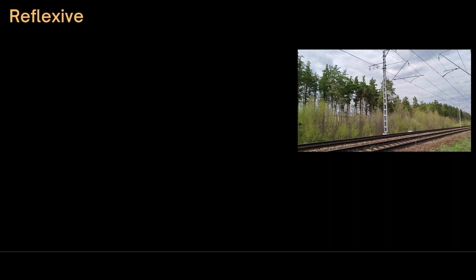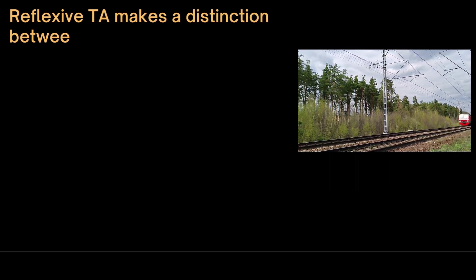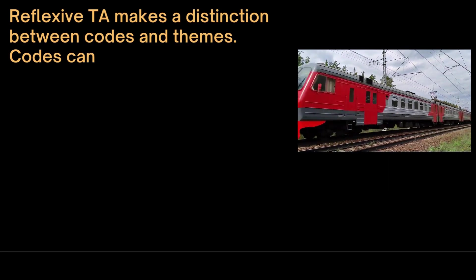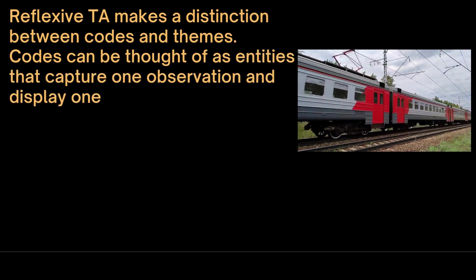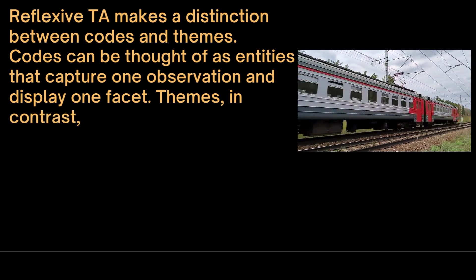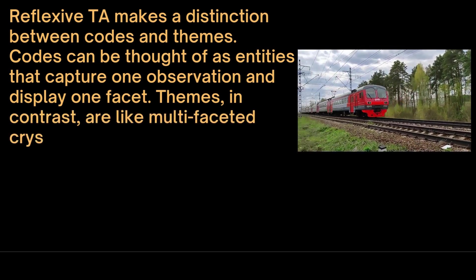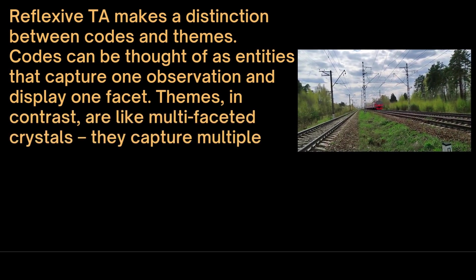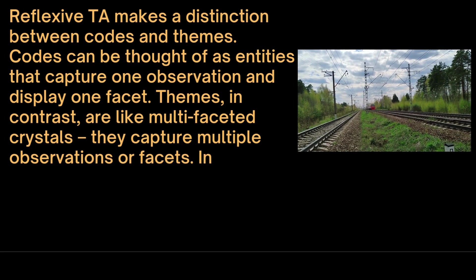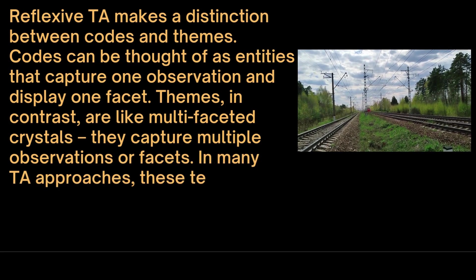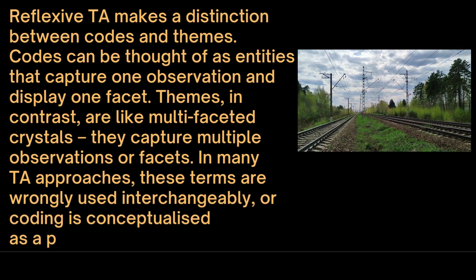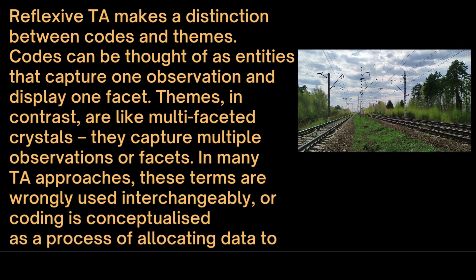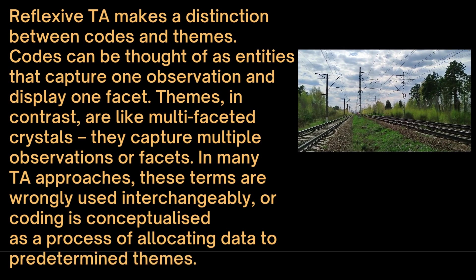Reflexive thematic analysis makes a distinction between codes and themes. Codes can be thought of as entities that capture one observation and display one facet. Themes, in contrast, are like multi-faceted crystals. They capture multiple observations or facets. In many thematic analysis approaches, these terms are wrongly used interchangeably, or coding is conceptualized as a process of allocating data to predetermined themes.